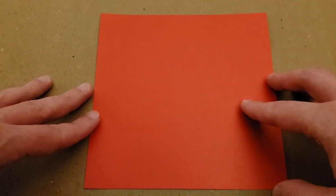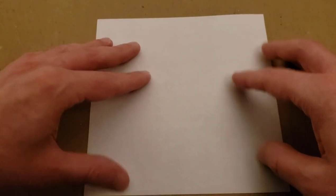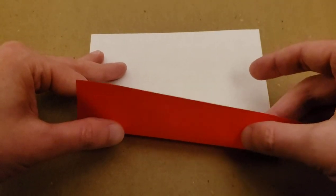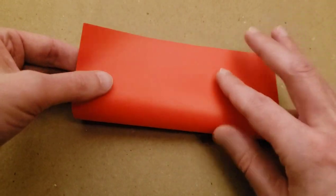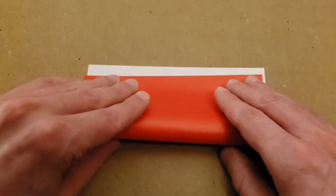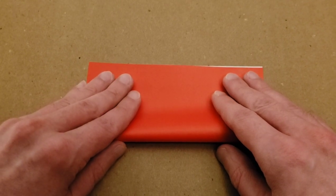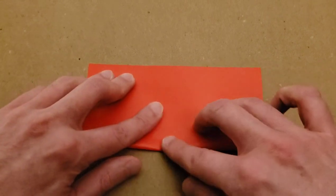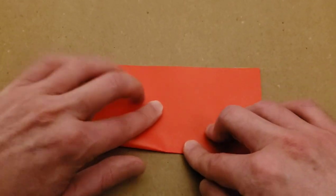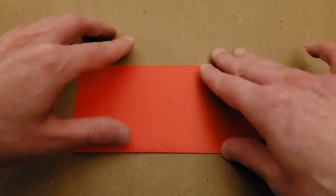If you're using origami paper, you're going to want to start with the white side up - that is, of course, if you want your crane to be colored on the outside. So starting with the white side up, we're going to fold it in half to make a rectangle. And then open it up.